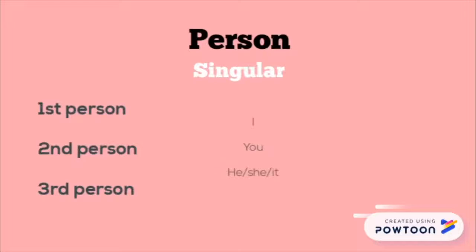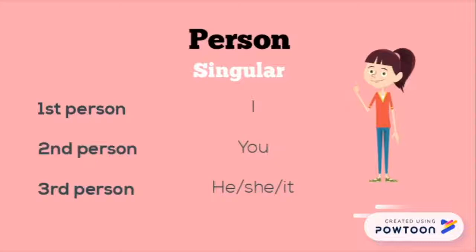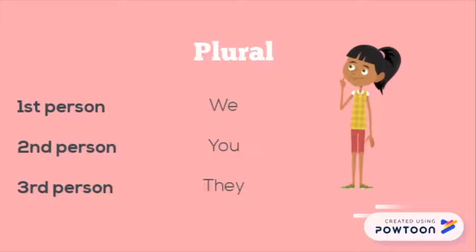Person. In the singular form, with first person we use 'I', with second person 'you', and with the third person we can use 'he', 'she', or 'it'. In the plural form, the first person is 'we', the second person 'you', and the third person 'they'.